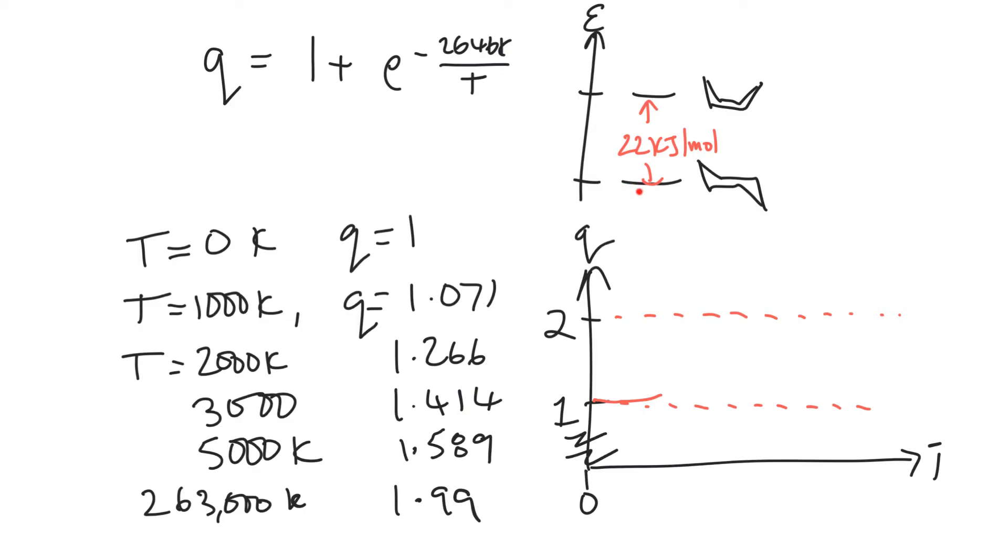What we find is that at low temperature, pretty much the partition function is 1, letting us know at low temperature, we can only access the ground state energy here, we can only access the chair form. But as we increase the temperature, it's going to be more likely that we can reach out and start to occupy the boat form. And as we raise the temperature up even more, then we can see that essentially both states are perfectly accessible to us. And so what did we calculate? So I think we calculated at 3,000 Kelvin, our partition function was 1 point, I think maybe I've dialed it up a little bit too high, 1.41. So essentially, you've got access to 1 and 4 tenths of a state at 3,000 Kelvin.